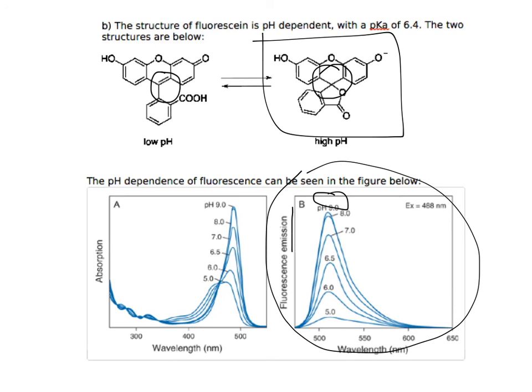As the pH decreases to around 5.0, we have mostly this species in solution, and thus a lower fluorescence emission.